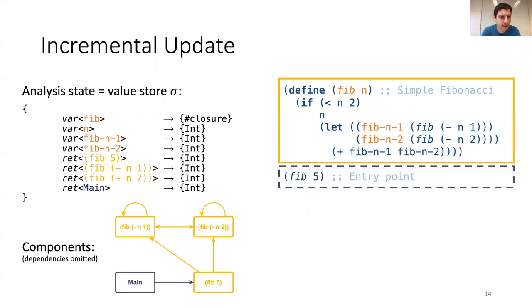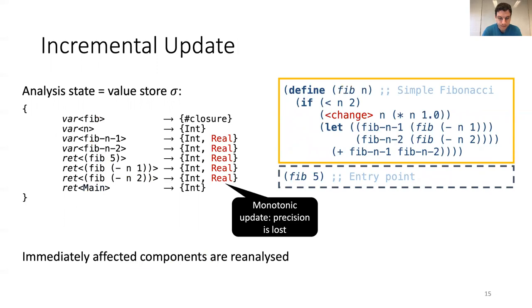So, suppose we have made a change and the analysis infers that almost all variables in the program are integers except for fib with a closure. And additionally, the analysis has inferred a set of components and dependencies and for every component, a return value. Then a developer makes a change to the program. So, instead of returning an integer, the developer converts it to a real in scheme. And so, the analysis will analyze the directly affected components, which will cause the return values for these components to be updated. And also, the analysis finds that now these two variables are also real.